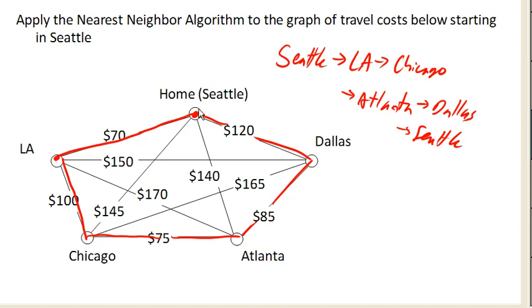Total cost here, if we add these up, I think is $450, which is insanely cheap. And there is our circuit generated using the nearest neighbor algorithm.